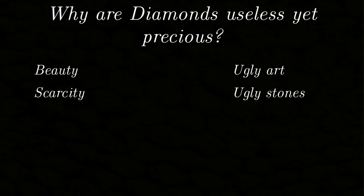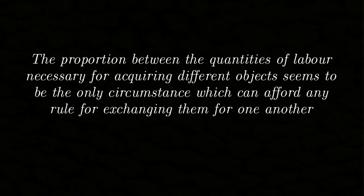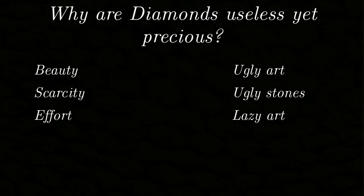However, Smith considers a third factor and decides it is the central one: 'The proportion between the quantities of labor necessary for acquiring different objects seems to be the only circumstance which can afford any rule for exchanging them for one another.' Again, art can be used as a counterexample — the value of a work of art is often in no relation to the effort put into it. So we see that none of the factors mentioned by Smith is sufficient to capture value, at least if you want value to include the value of investments. And in fact, Smith's value theory is one of the most criticized and overhauled aspects of his work. Nevertheless, he uses it to make an important point in his theory about how price is determined.